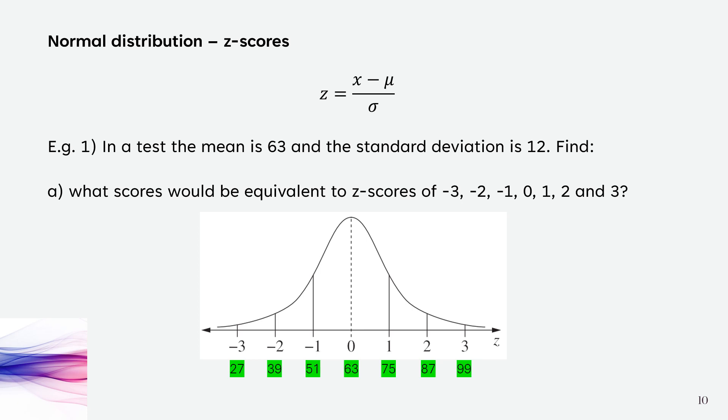We can use the formula, or sometimes it's easy just to write them all out with the mean in the middle, adding a z-score each time to the right and subtracting a z-score each time to the left.